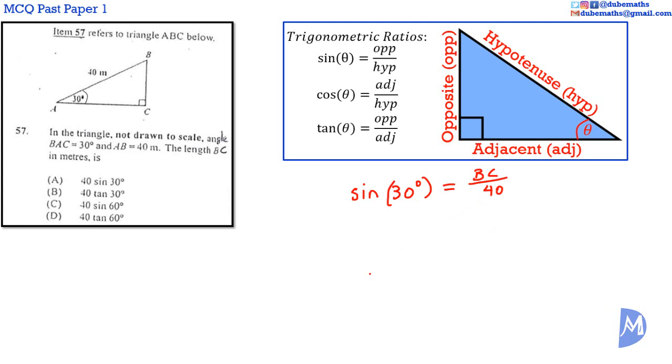Solving for BC, multiplying by 40 on both sides, sine 30 degrees multiplied by 40 is the same as 40 sine 30 degrees. Multiplying by 40 on the right hand side, the 40s would cancel to remain with BC. BC is equal to 40 sine 30 degrees. The answer is A.